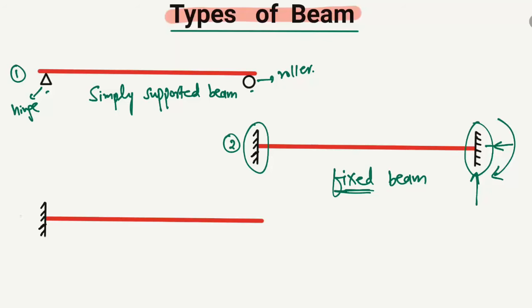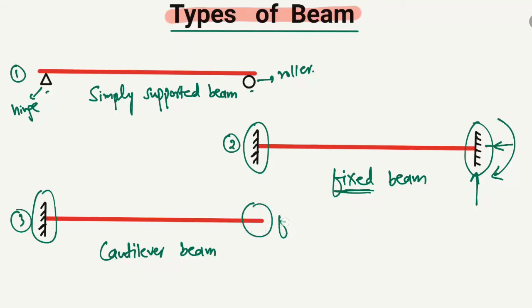The third type of beam, which has only one fixed support at one end, is known as the cantilever beam — also one of the most commonly used types. Here, one end is fixed while the other end is free. When one end has a fixed support and the other end is free, this type of beam is known as the cantilever beam.